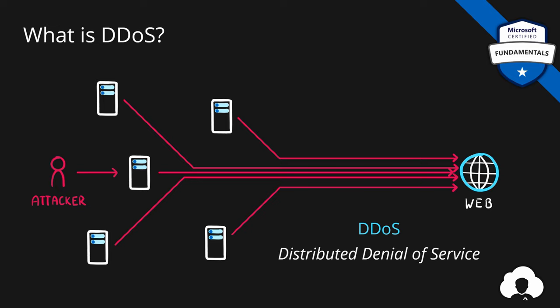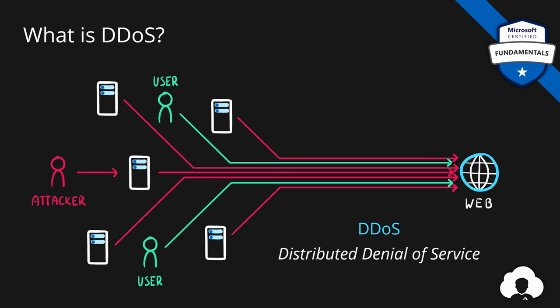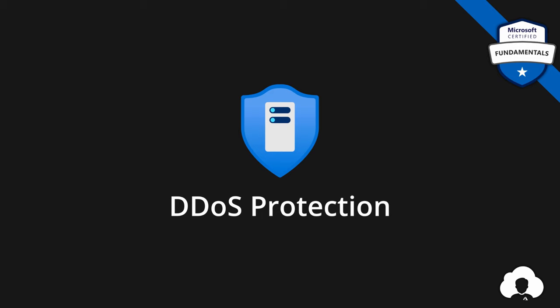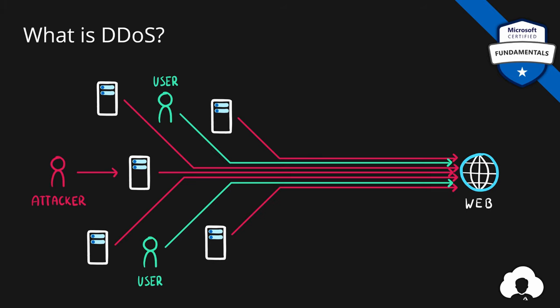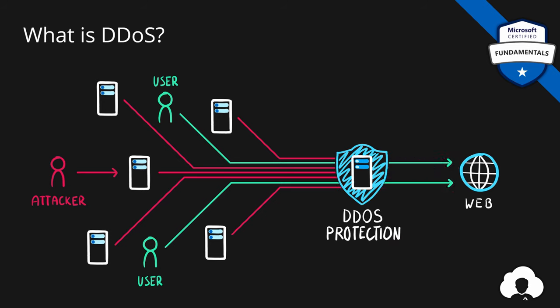Preventing DDoS attacks is pretty tricky, because not only do you need to be able to identify which servers are attacking you, but also separate them from legitimate users trying to reach your servers, and only filter the attackers out while still allowing your users to connect. And this is where Azure DDoS protection comes in. If this scenario happened in Azure and our web server was hosted on Azure App Service, then in front of Azure App Service there would be a DDoS protection service which would filter the malicious traffic out and let the legitimate users in.